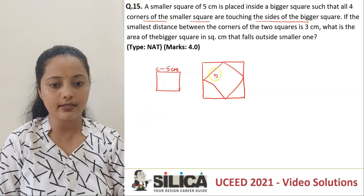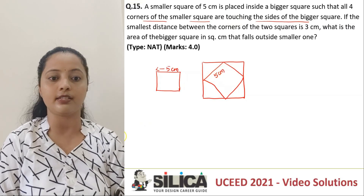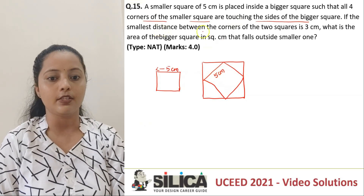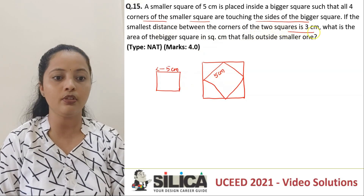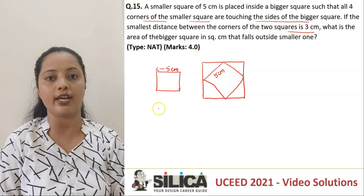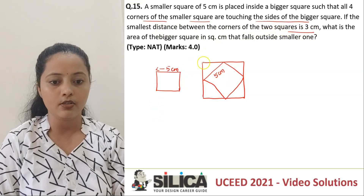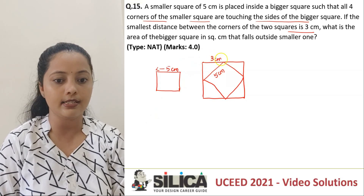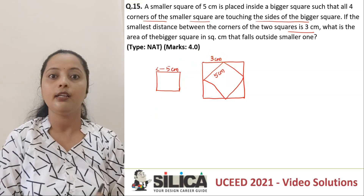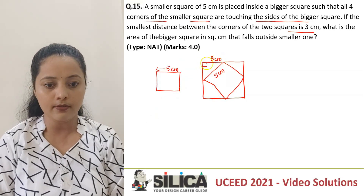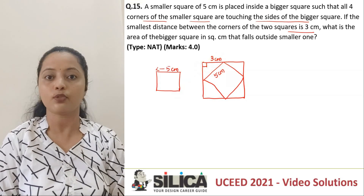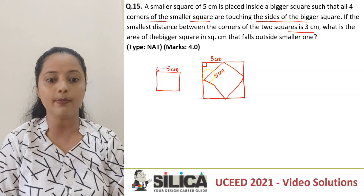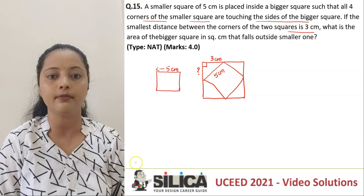This side is 5 cm, and along with that, the smallest distance between the corners of the 2 squares is 3 cm. So I can take any one distance as 3 cm. Now, the outer figure is a square, so this angle will be 90 degrees. So using Pythagoras, can I just find this side?